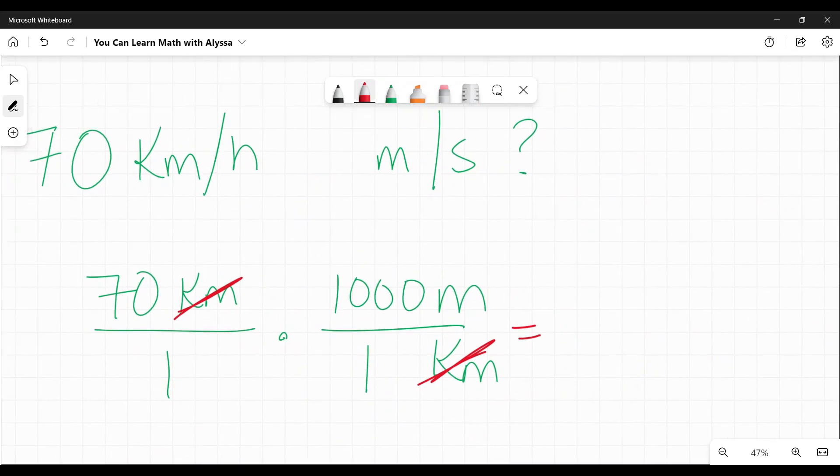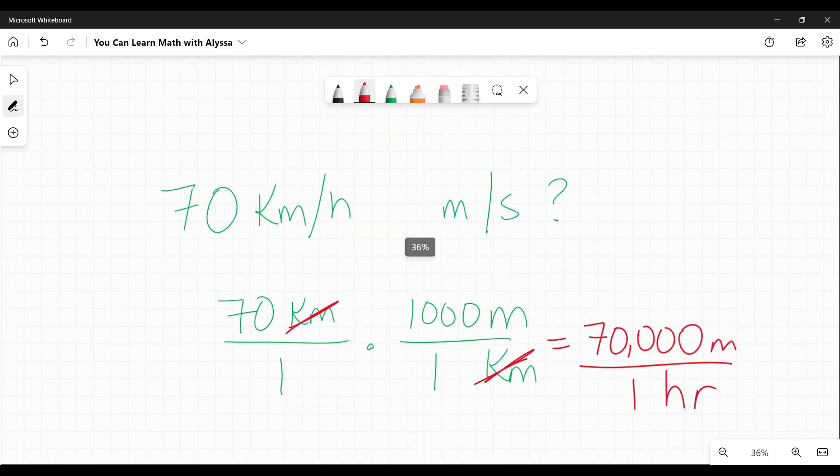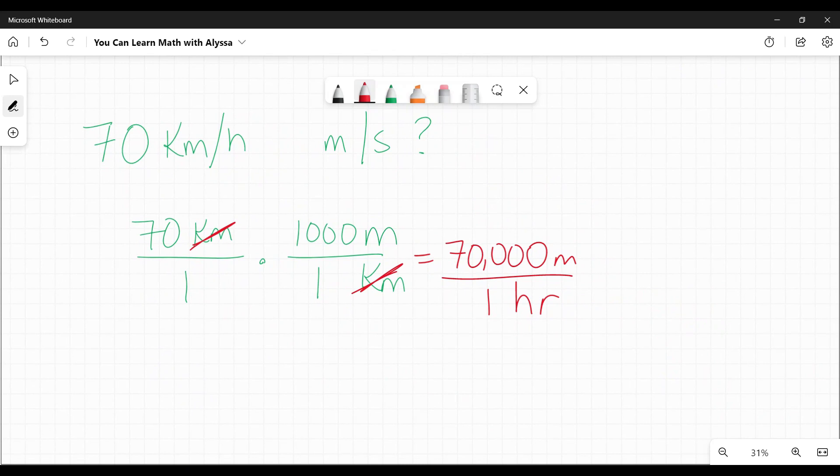So 70 times a thousand is 70,000 meters. So now I know it's 70,000 meters per hour. How many meters per second? Okay. I'll zoom up and move over. All right. So 70,000 meters in one hour. I need to convert this to seconds. Now this is, we're getting from bigger down to smaller. So we're going to end up with a big number on the bottom. That's what's going to happen when you're going bigger to smaller.